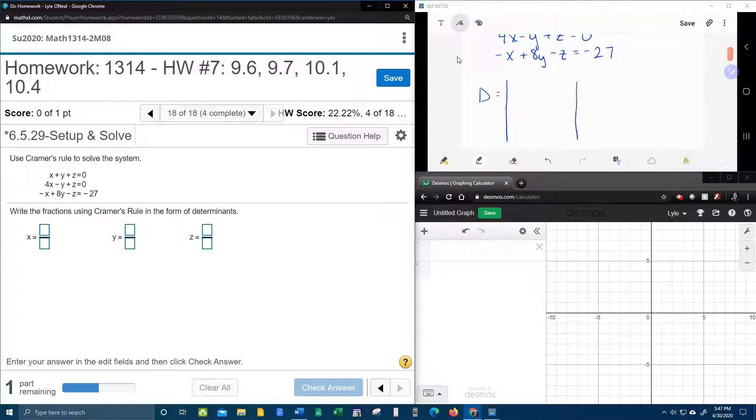Here we go. Using Kramer's rule, the first thing that we need to find is what I call regular D. And regular D is the determinant of the coefficients. So we're going to have a determinant, and this is the determinant of the coefficients. So 1, 1, 1. Those are the coefficients of x, y, and z. And then we have 4, negative 1, 1. And last, we have negative 1, 8, negative 1.